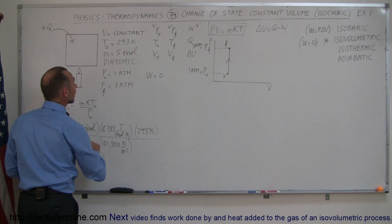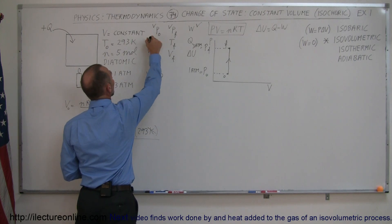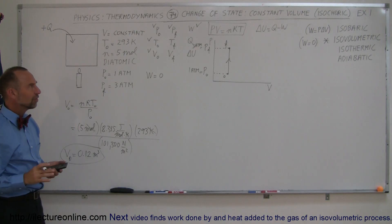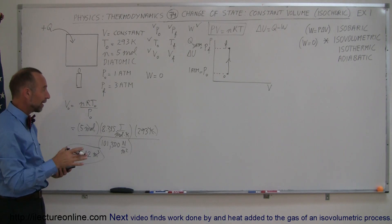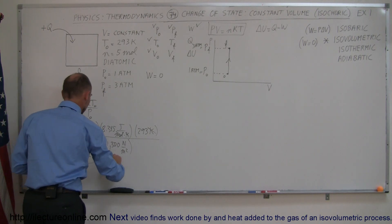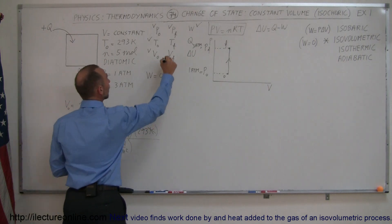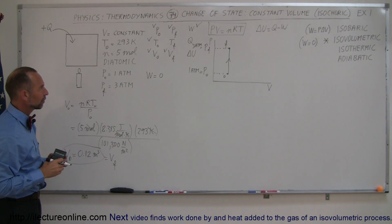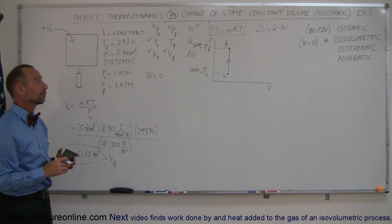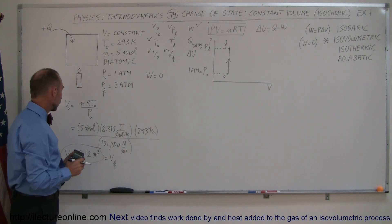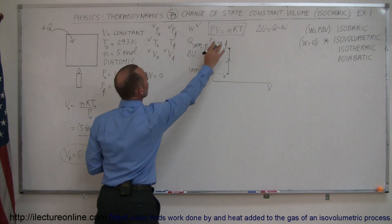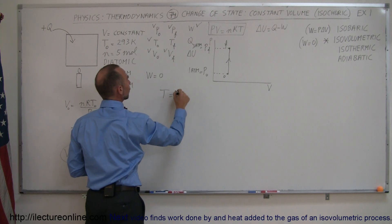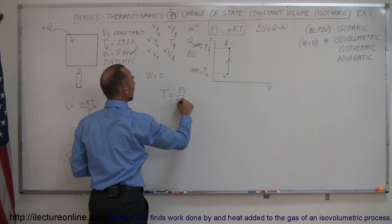We've calculated the initial volume, and since the initial temperature was given, both are now known. Since the volume stays constant, the final volume equals the initial volume — 0.12 m³. The only remaining state variable to find is the final temperature. We'll use PV = nRT solved for T: T = PV / nR.